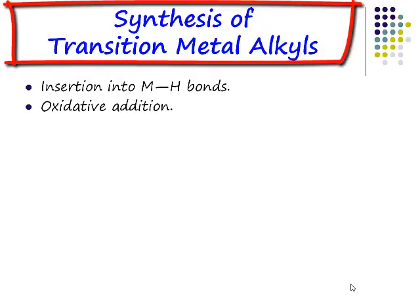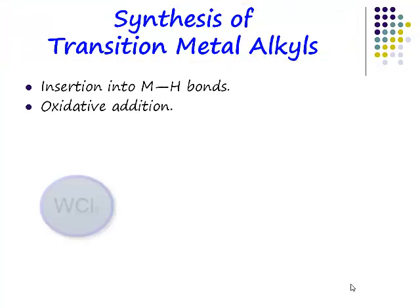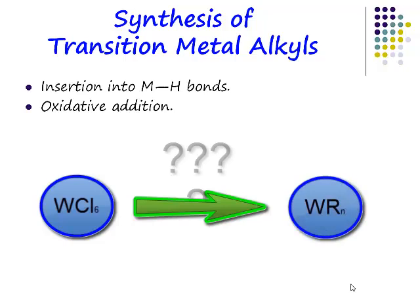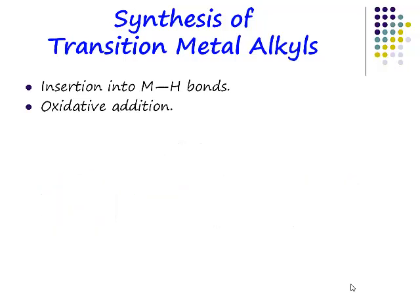Synthesis of transition metal alkyls. If you had tungsten hexachloride and you wanted to make a tungsten alkyl complex, how would you do it? By comparison to the main group chemistry that we learned, if you wanted to make a transition metal alkyl complex from the metal halide, how would you do it?